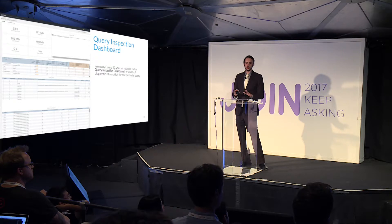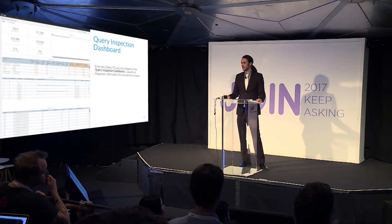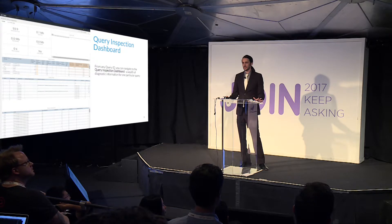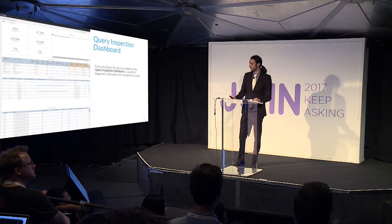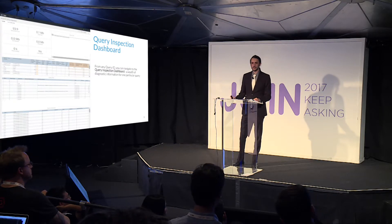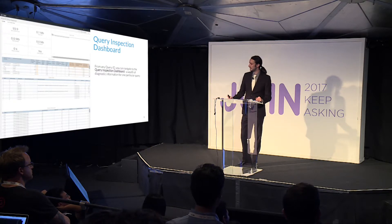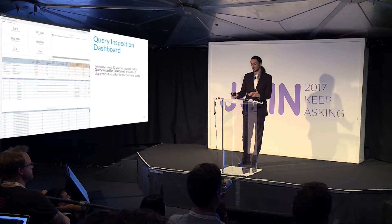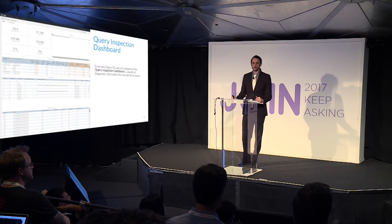Rather than go into too much theoretical detail, I want to give you five issues that will represent 90% of your performance problems, and show you how to identify them using the query inspection dashboard with ideas for corrective actions. The first issue is large nested loop joins — this can come up in any database dialect, not just Redshift, but the block will help you quickly identify those.